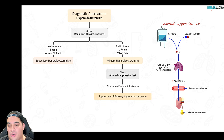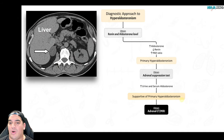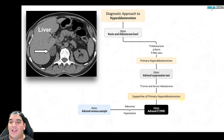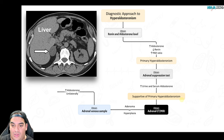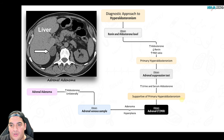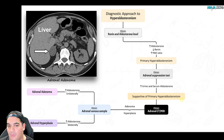Next, determine whether it's hyperplasia or adenoma. Get an adrenal CT or MRI — bilateral involvement suggests hyperplasia; unilateral mass suggests adenoma. To be even more specific, perform adrenal venous sampling: take blood from both adrenal veins and measure aldosterone levels from each gland. If only one side has elevated aldosterone, this suggests a unilateral process — an adenoma, also known as Conn syndrome. If both sides are elevated bilaterally, it's a bilateral process — adrenal hyperplasia. This is one of the most confirmatory ways to differentiate the two.